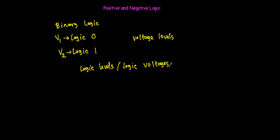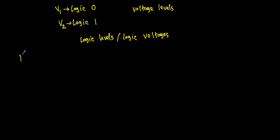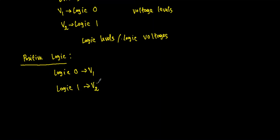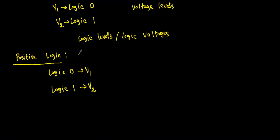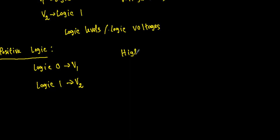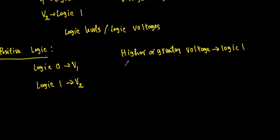So what is positive logic? To represent logic zero I will apply a voltage V1, and to represent logic one I will apply a voltage V2. A logic is said to be positive logic if the higher voltage or greater voltage represents logic one, and the lower voltage or smaller voltage represents logic zero. That means in a positive logic system, the value of voltage V2 will be greater than V1.